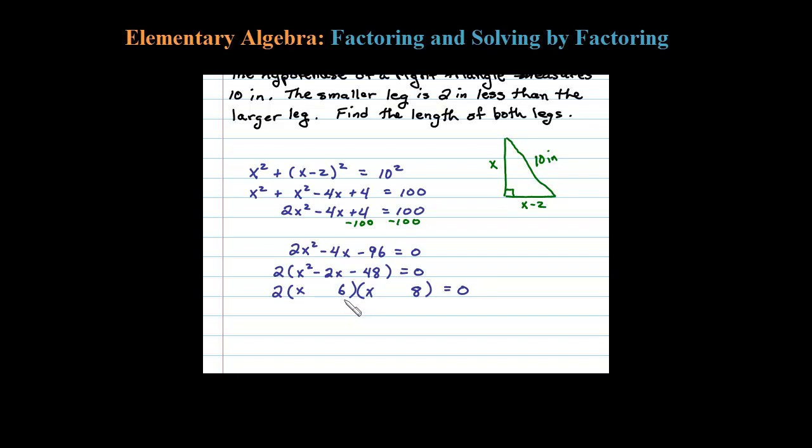My middle term has to come from the product of the inners and the outers. So we have a 6X and an 8X. 6X and 8X gives me a negative 2X if the 8 is negative and the 6 is positive. Let's check that the end term works out. Positive 6 times negative 8 is negative 48. Looks good.